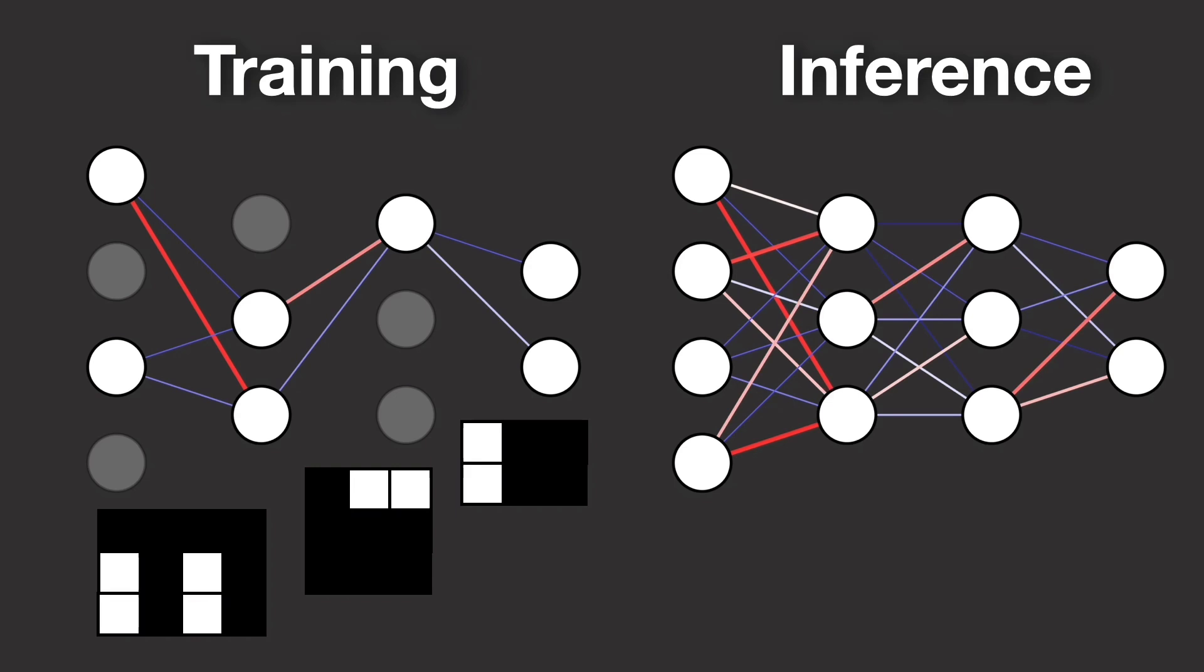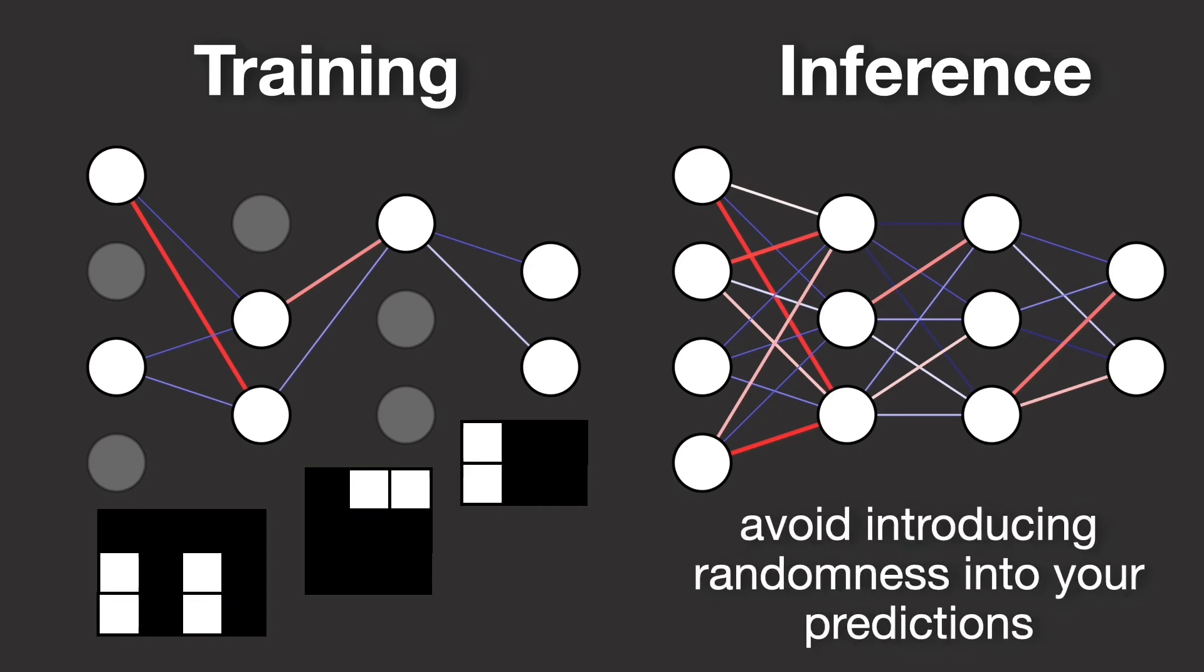Why do you do that? Well, without dropout during testing, you avoid introducing randomness into your predictions, ensuring that the outputs are stable, reliable, and deterministic.